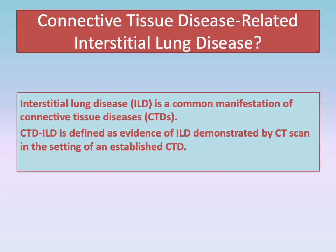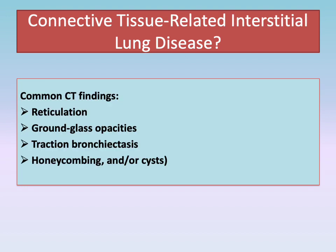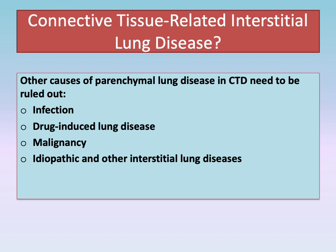ILD exists in about 40 to 50 percent of patients with connective tissue disease. CTD-ILD is a leading cause of morbidity and mortality. Common CT findings of ILD in varying degrees include reticulation, ground glass opacities, traction bronchiectasis, honeycombing and/or cyst formation. Other causes of parenchymal lung disease in connective tissue disease need to be ruled out, such as infection, drug-induced lung disease, malignancy, and/or other interstitial lung diseases.